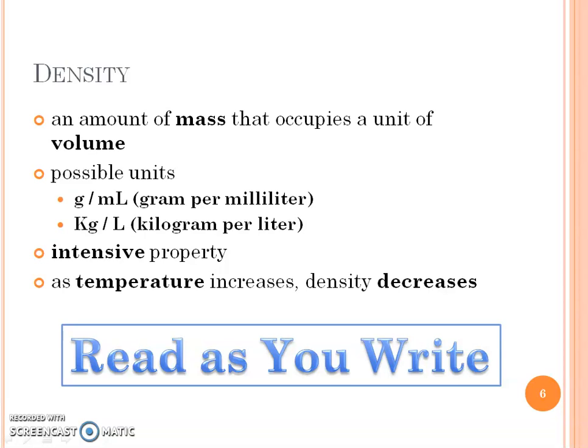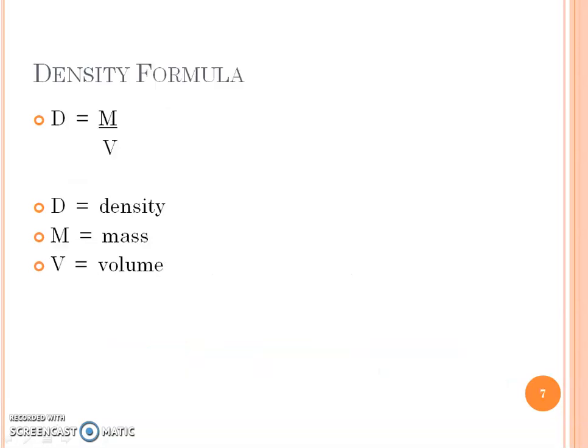There's other possible units, like kilograms per liter - any mass unit per any volume unit. If we have a density of 2 grams per milliliter, it's really 2 grams per 1 milliliter, so you're going to see later on that we're going to use density as a conversion. Density is an intensive property - it doesn't matter if we have one drop of water or a pool full of water. If it is pure H2O, that drop would be 1 gram per milliliter for density, and a pool would be 1 gram per milliliter. As temperature increases, density decreases.